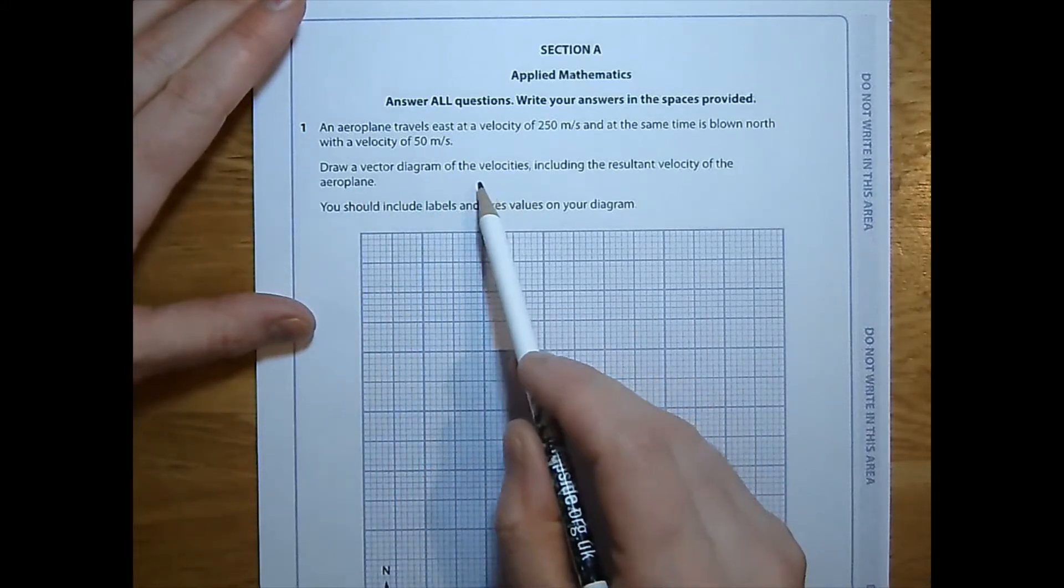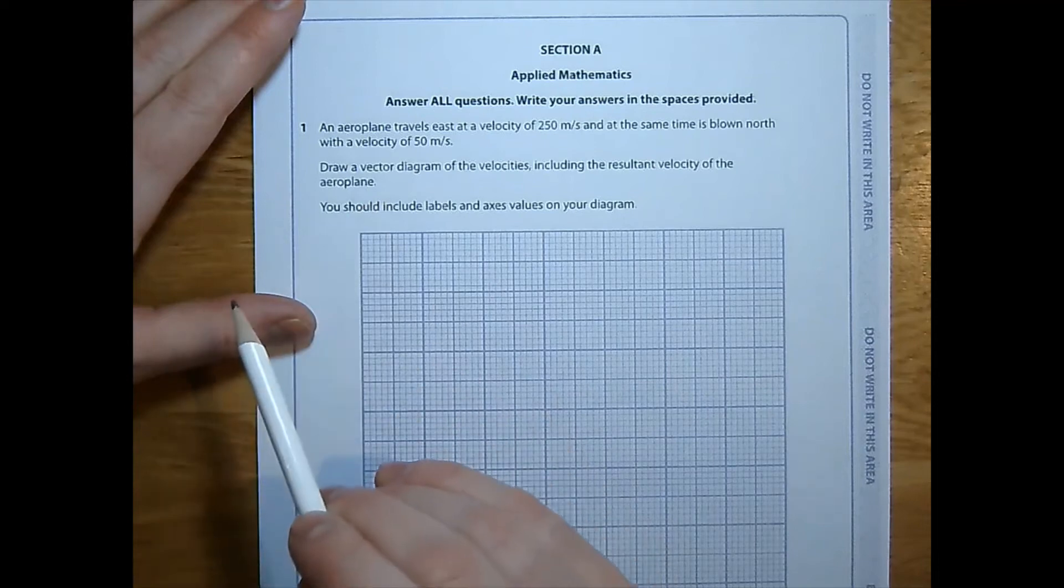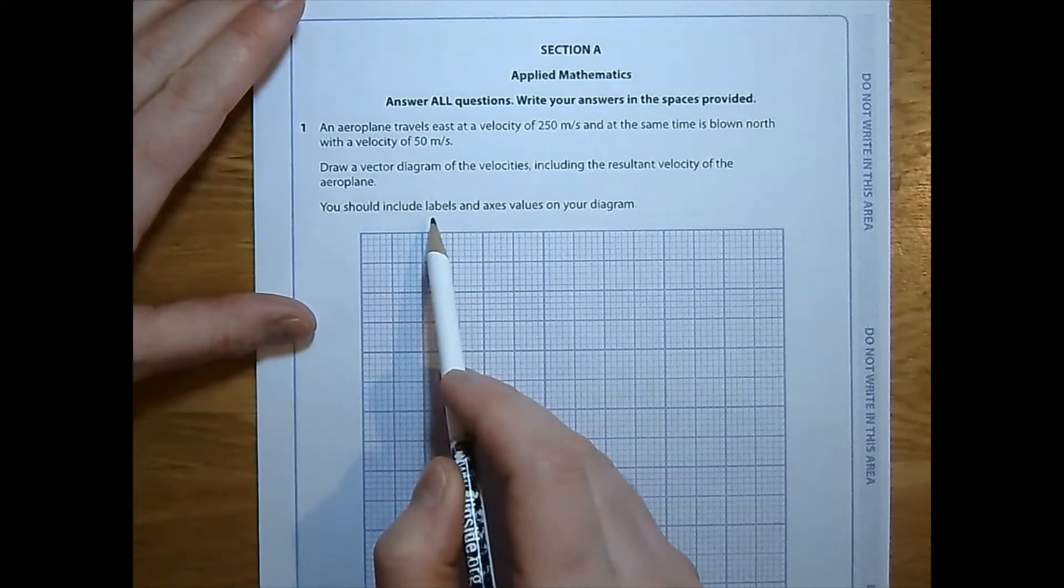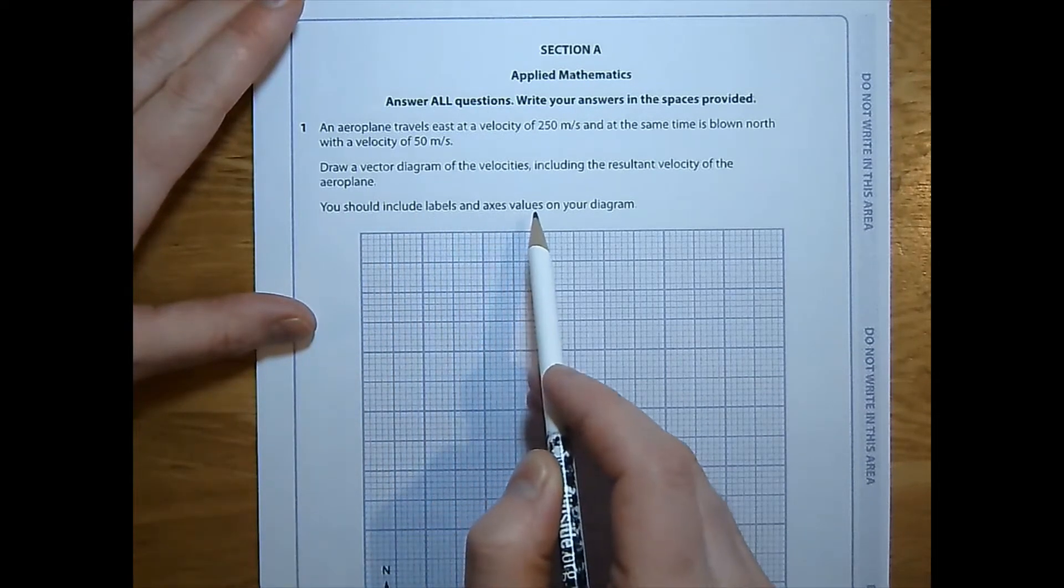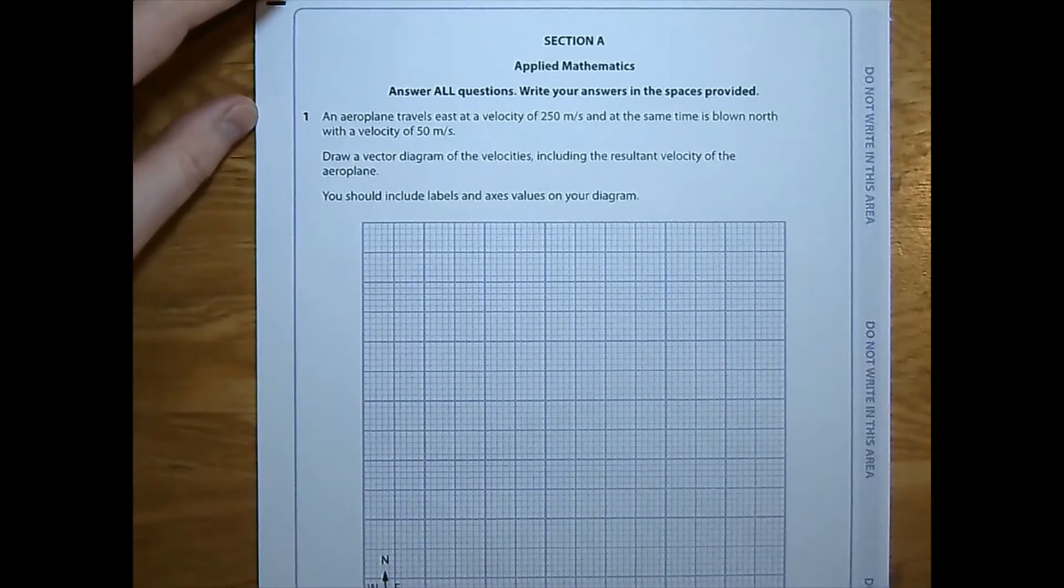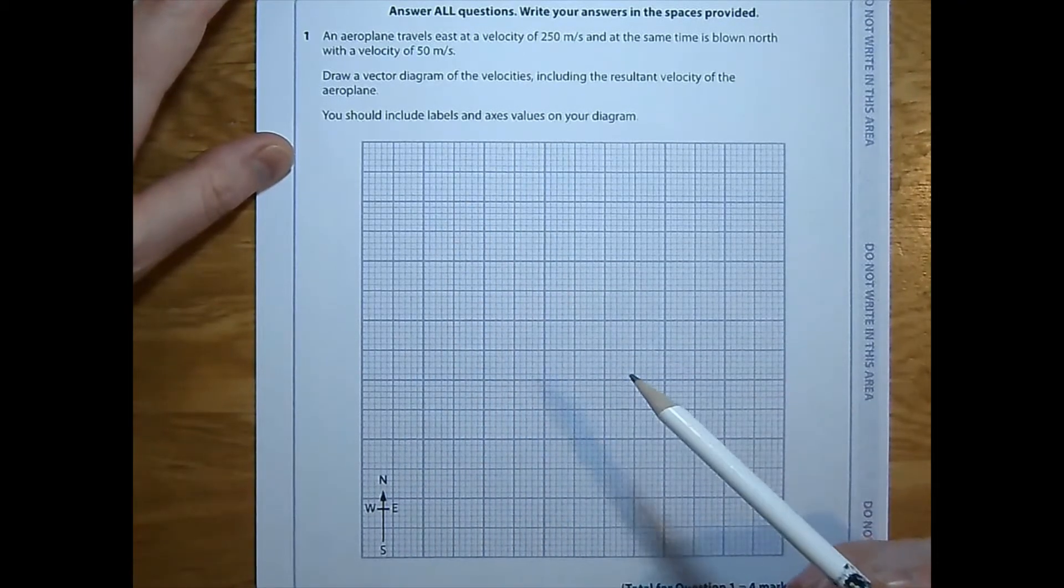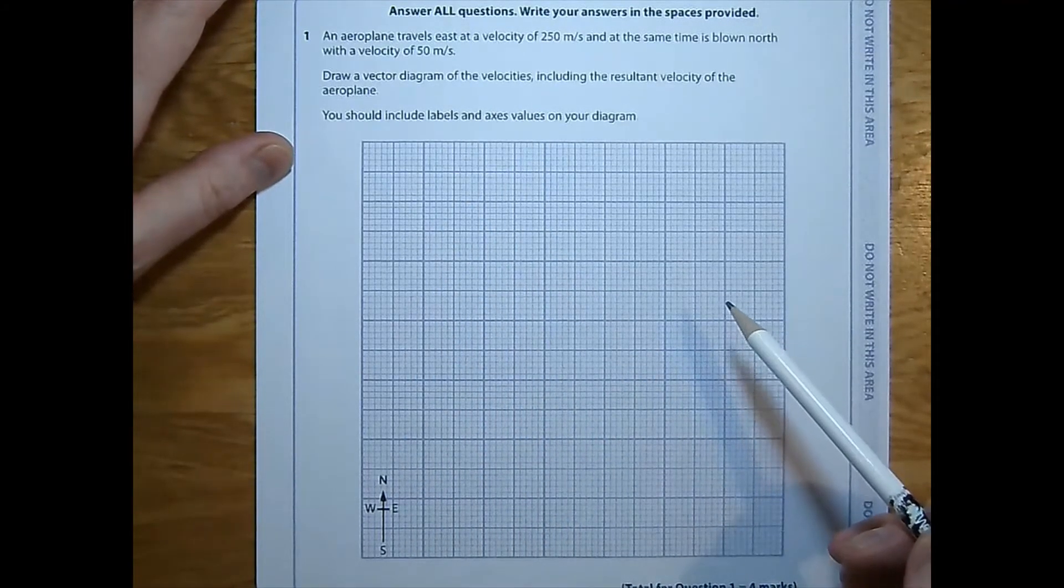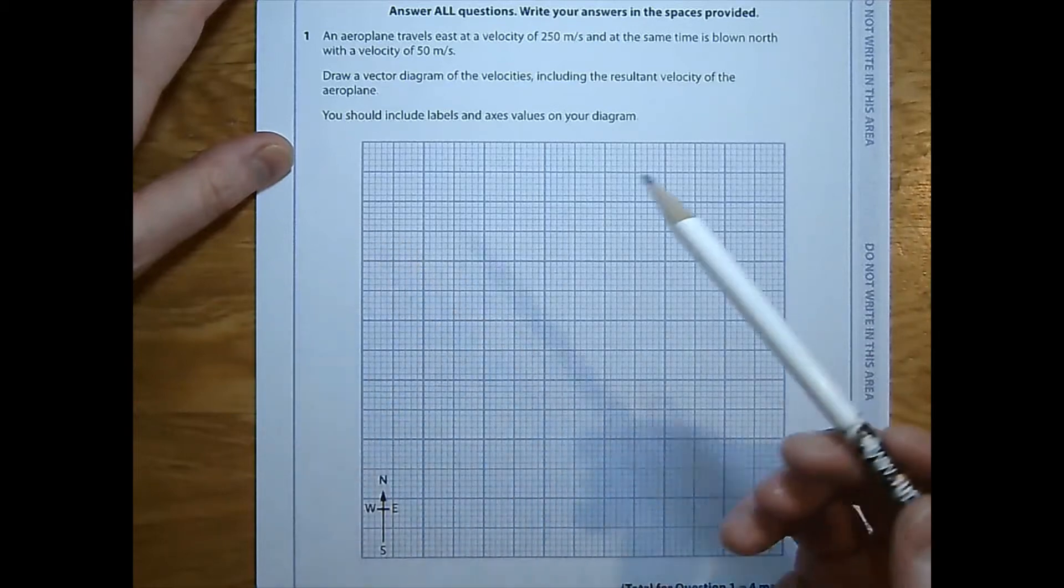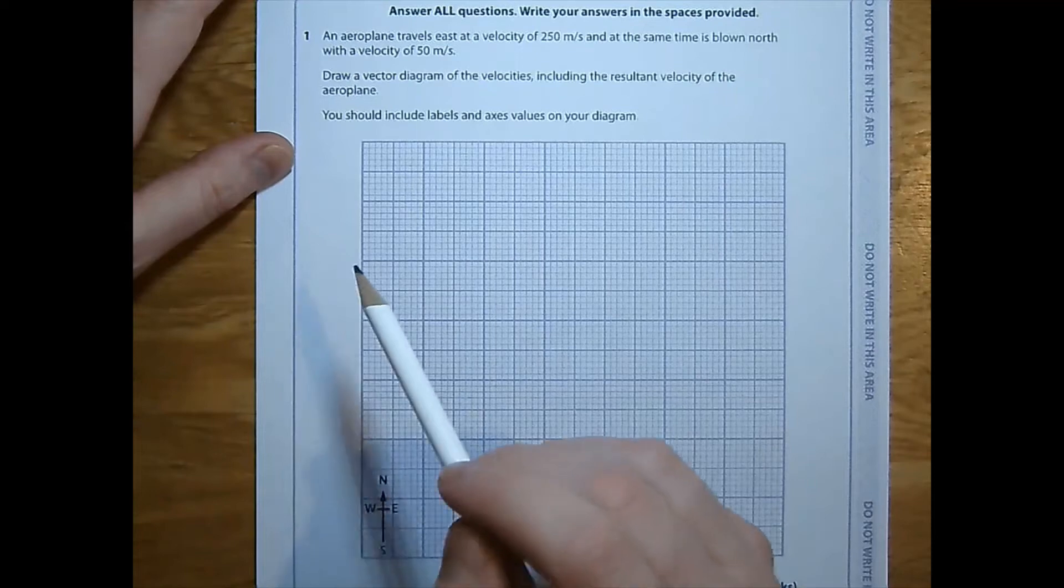Draw a vector diagram of the velocities, including the resultant velocity of the aeroplane. You should include labels and axes values on your diagram. So there's a few things to note here. The past papers on vectors have been a little bit inconsistent. They have sometimes required axes and sometimes not.